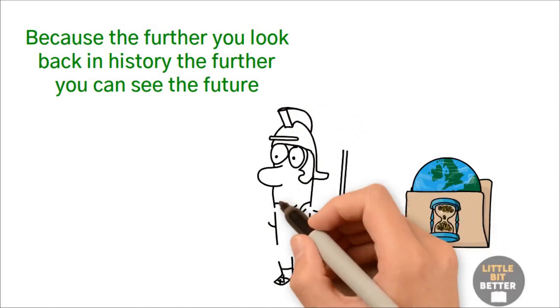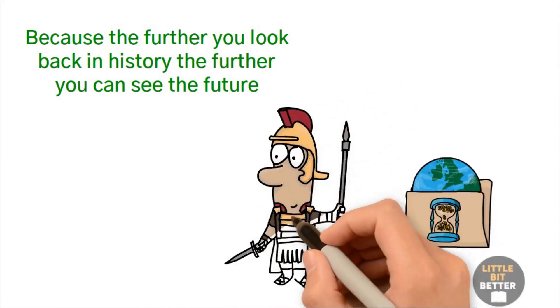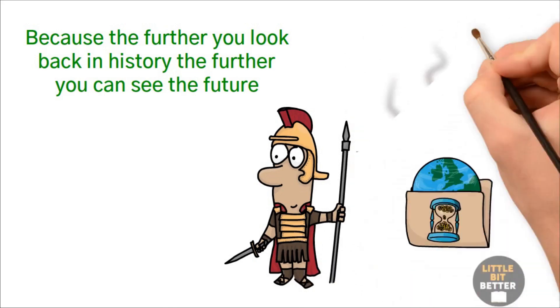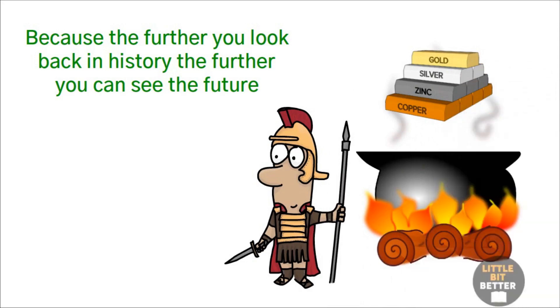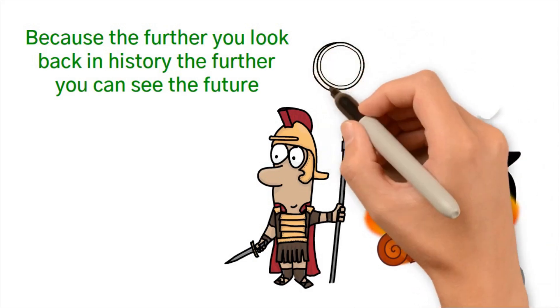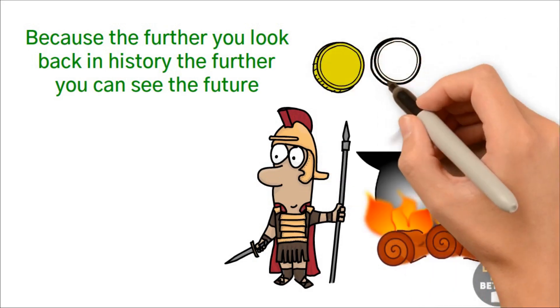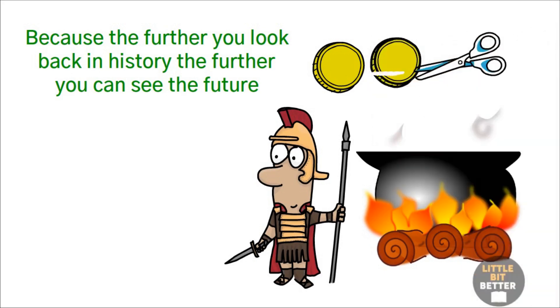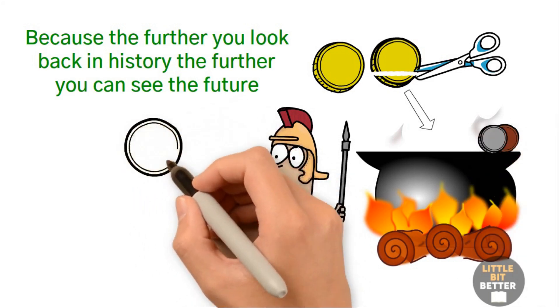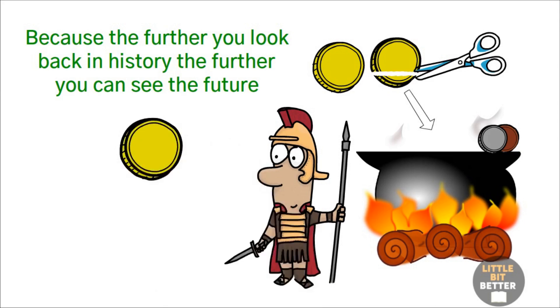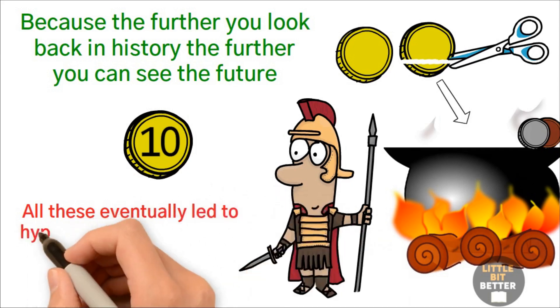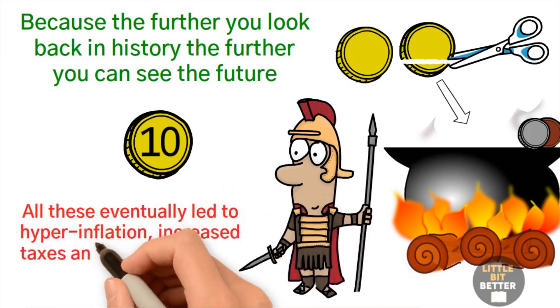When the Roman Empire was faced with war, they started debasing the currency, which also means printing money. Since silver and gold coins were used as money, they started to melt them and add other metals inside to increase the money supply. They also tried another version of money printing called coin clipping, which means when the tax money was collected, they would clip the edges of the coin and then melt all the small pieces in order to create new money. They even used revaluation of the currency. The government took a one coin and then pasted a zero next to the one. And suddenly you have a 10 coin. All these eventually led to hyperinflation, increased taxes, and economic chaos.